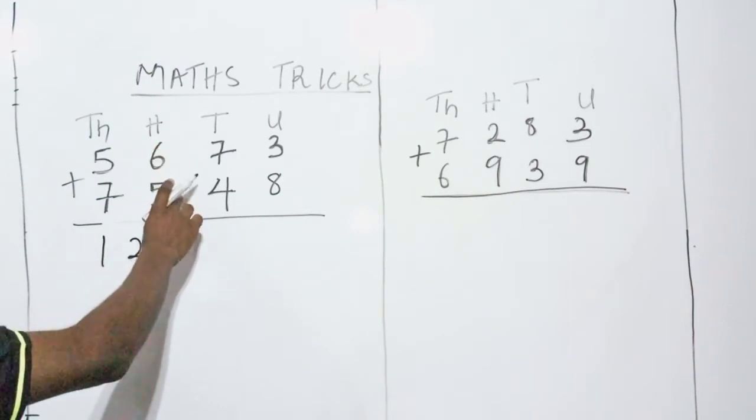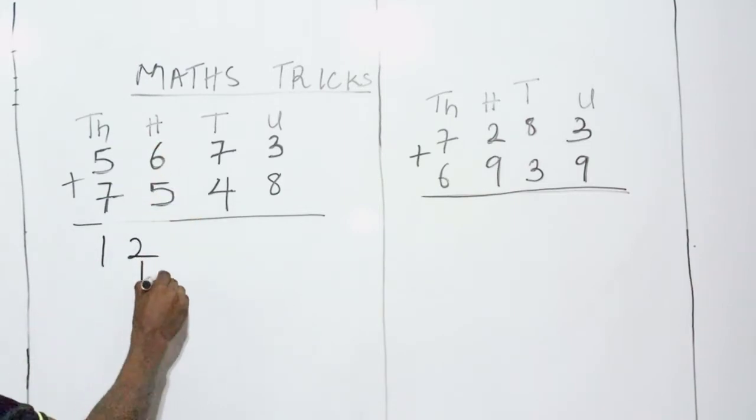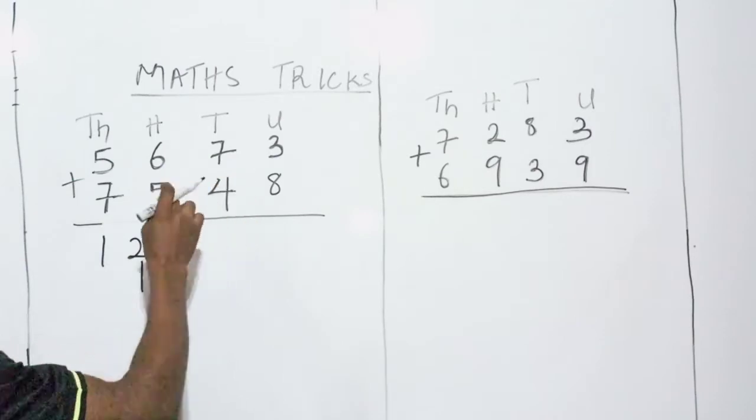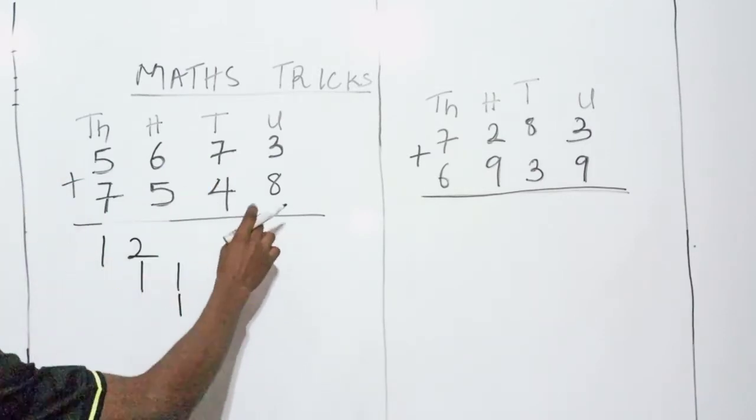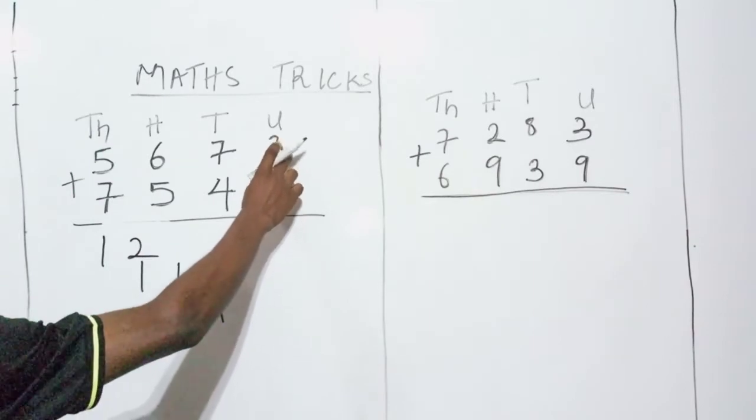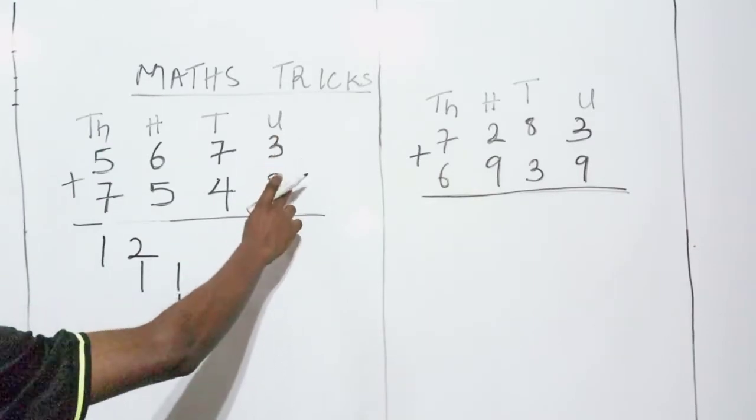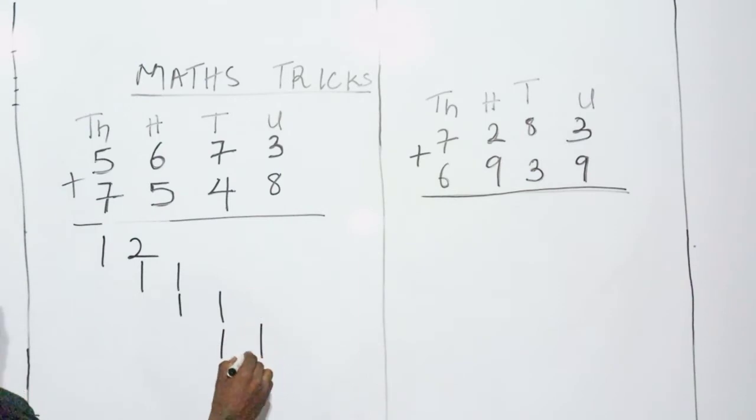Then 6 plus 5 is 11. I write my 11. 7 plus 4 is still my 11. I have to write my 11. Then 8 plus 3. 3 plus 8 is still 11. I have to write 11.